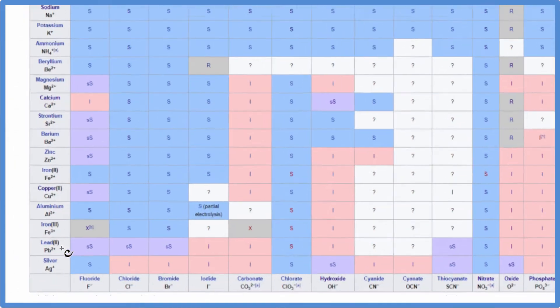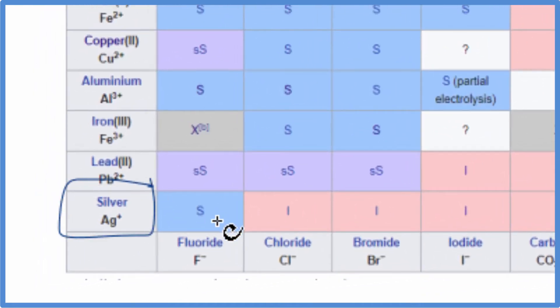On the solubility table, we find silver right here. And then here's fluorine, the fluoride ion right here. You see this S. Silver fluoride, AgF, is going to be soluble, so it's going to be aqueous. When we put it in water, it'll dissolve.